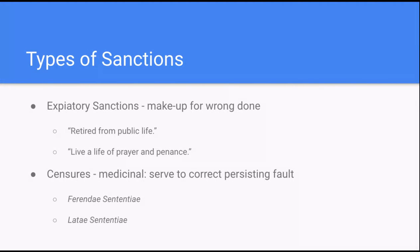And they also must have full use of their reason. Now the sanctions come in two types: first, expiatory, and then censures. Expiatory sanctions are much like a prison sentence in criminal law here in the U.S. — it really makes up for the wrong that has been done; it's a way to carry out justice to make up for the injustice that has been done.